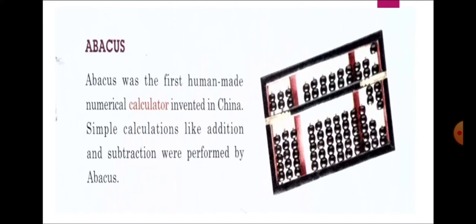Abacus was invented about 5000 years ago by the Chinese. It calculated simple calculations like addition and subtraction. Our next device is Napier bones.